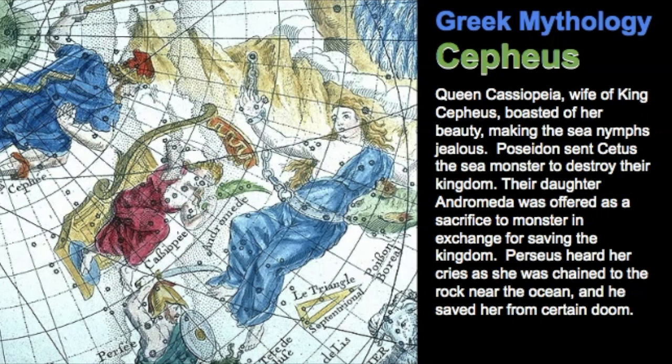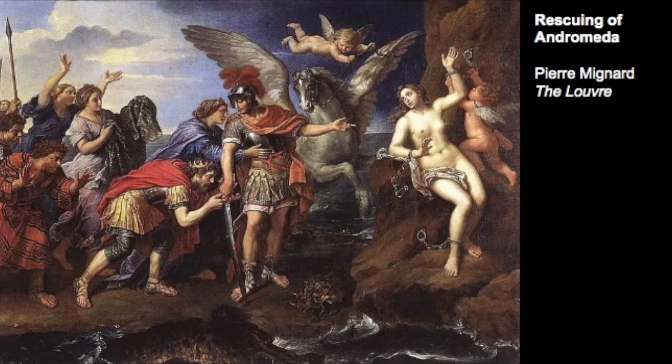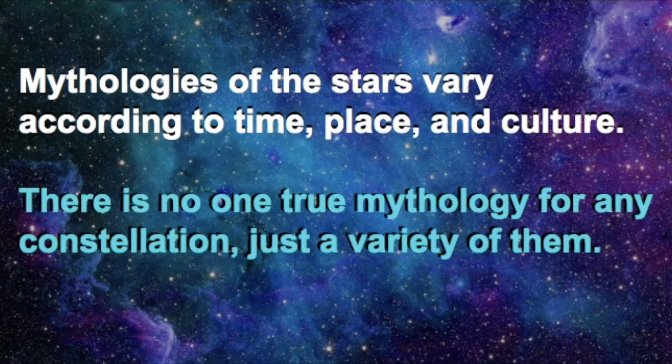So all the characters of this story are located in the sky. We have Cepheus, Cassiopeia, Andromeda which is she's often pictured as chained to a rock. We have Perseus and then Cetus is not located in this picture but is also a constellation and part of this story. Here is a painting called The Rescuing of Andromeda and you can see everyone here in this tale. So we have Cepheus, Cassiopeia, Perseus. We even have Pegasus here. Here's Andromeda and then Cetus the sea monster is located right here or at least what's left of him. Remember that the mythologies of the stars vary according to time, place, and culture. There is no one true mythology for any constellation, just a variety of them.